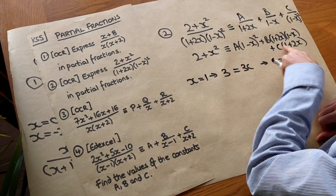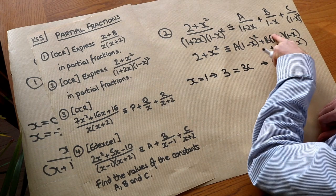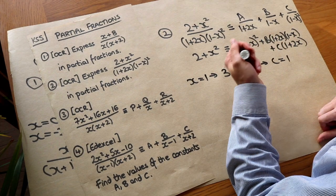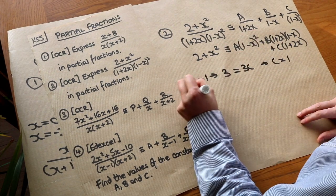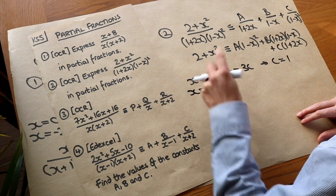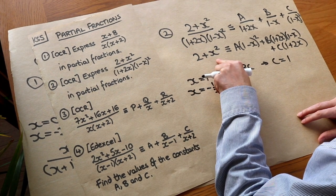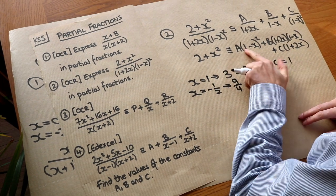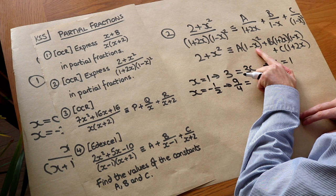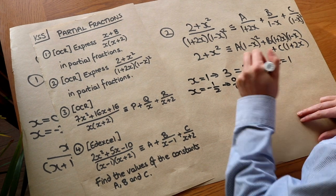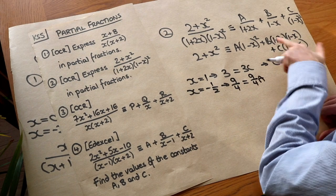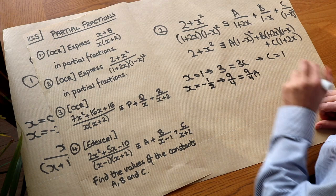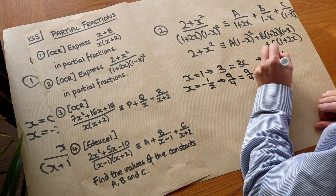Now let's try making (1+2x) = 0, which happens when x = −½. The left-hand side becomes 2+(−½)² = 2+¼ = 9/4. On the right-hand side: (1−(−½))² = (3/2)² = 9/4, so we get (9/4)A. The B and C terms zero out because we're substituting x = −½ into (1+2x). So 9/4 = (9/4)A, meaning A = 1.